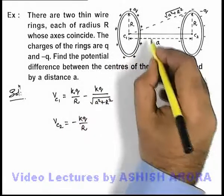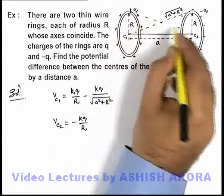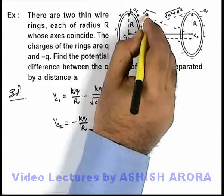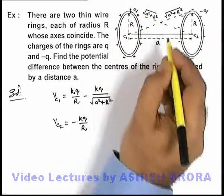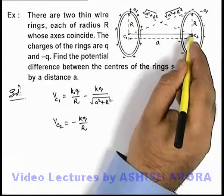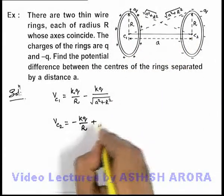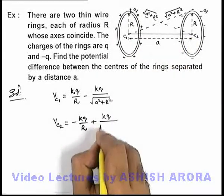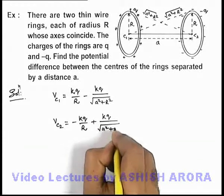And due to this ring, at the center C2, the distance is again the same as root of a² plus R². So due to plus q, potential at point C2 can be given by kq by root of a² plus R².